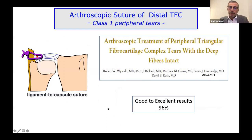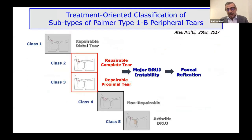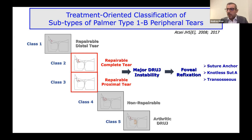The repair of the distal tear — this ligament-to-capsule suture — provides very good or excellent results, as the literature shows. Classes 2 and 3 are those tears associated with proximal rupture and foveal rupture of the insertion. They are associated with major DRUJ instability and require foveal refixation as the optimal treatment. Refixation can be performed by different means: suture anchor, knotless suture repair, transosseous repair, among others.